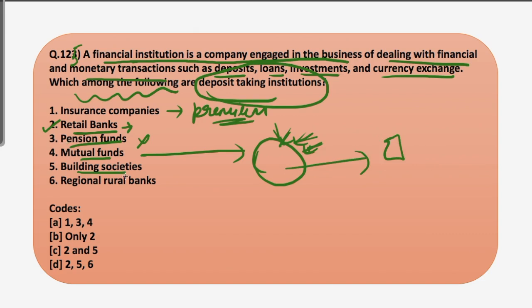Building societies are financial institutions owned by their members as mutual organizations, offering banking and related financial services especially savings and mortgage lending — they accept deposits too. The difference from retail banks is that banks are listed on the stock market and owned by shareholders, while building societies have no external shareholders; mortgage borrowers, savers and current account holders are the members who vote on decisions. Regional rural banks provide loans and other financial assistance to entrepreneurs in villages, suburban areas and small towns, and also accept deposits. So our answer is 2, 5 and 6 — that is option D.